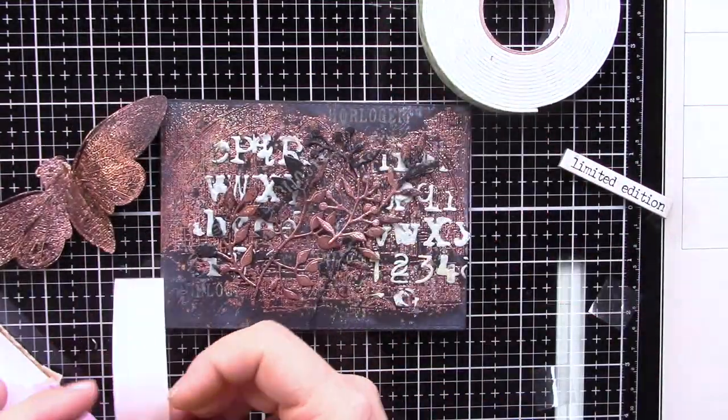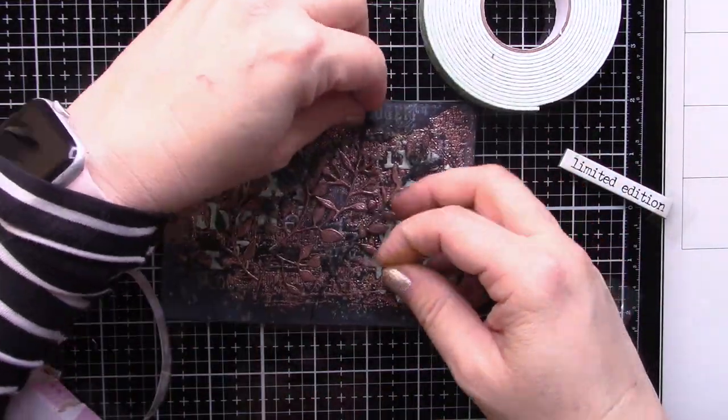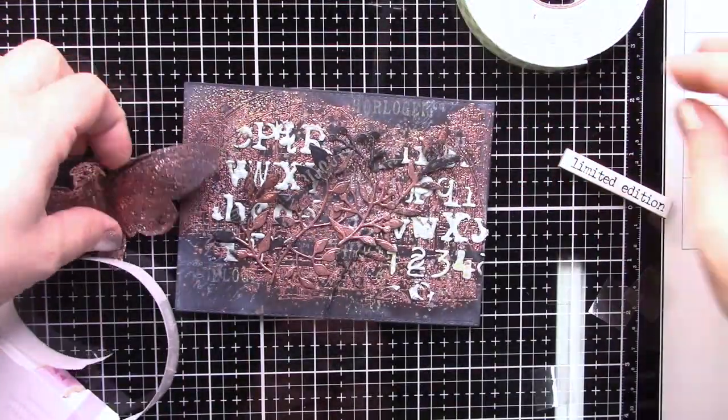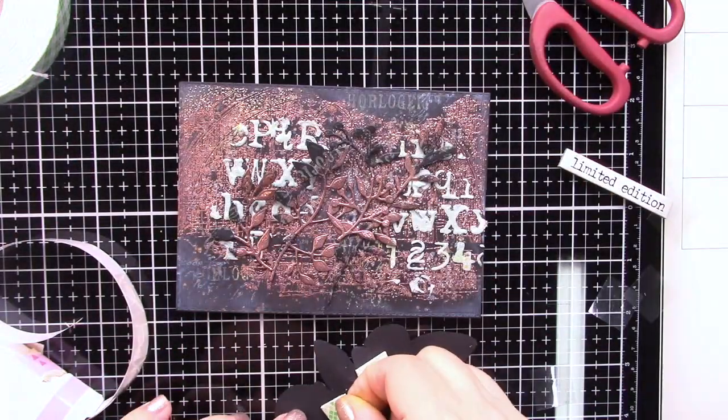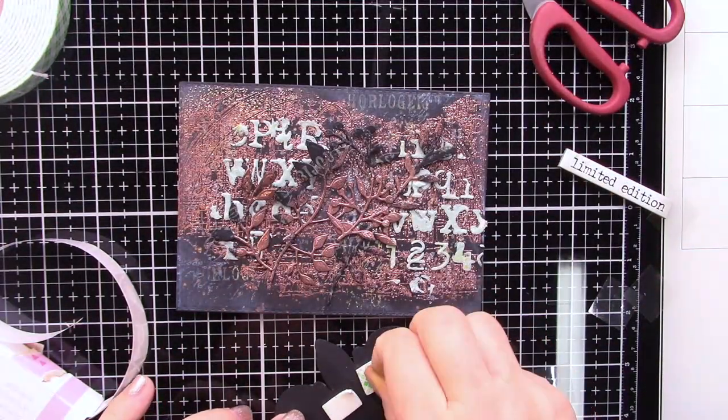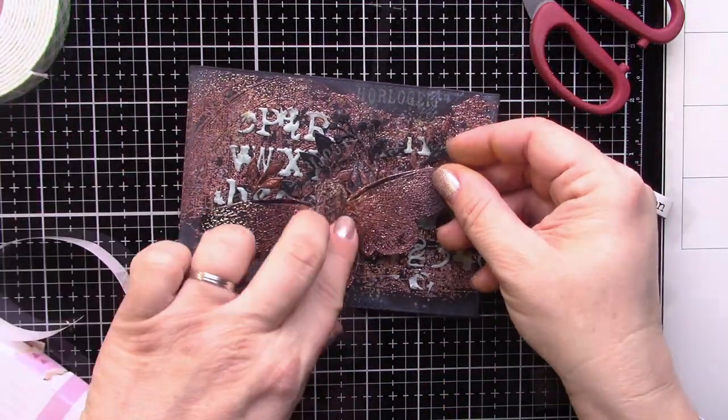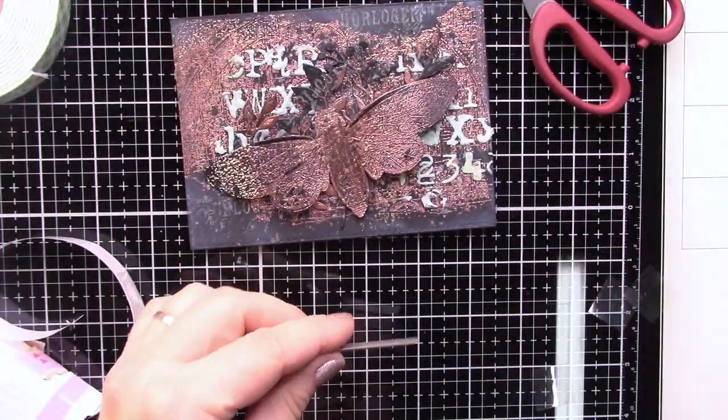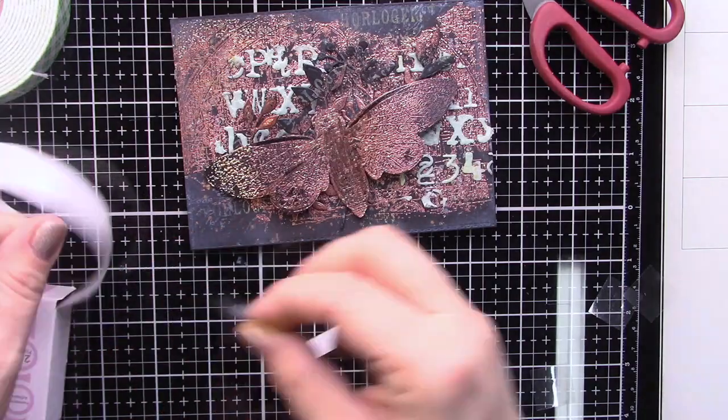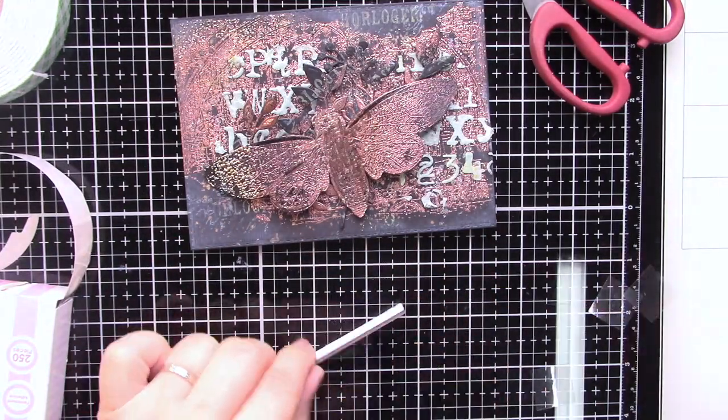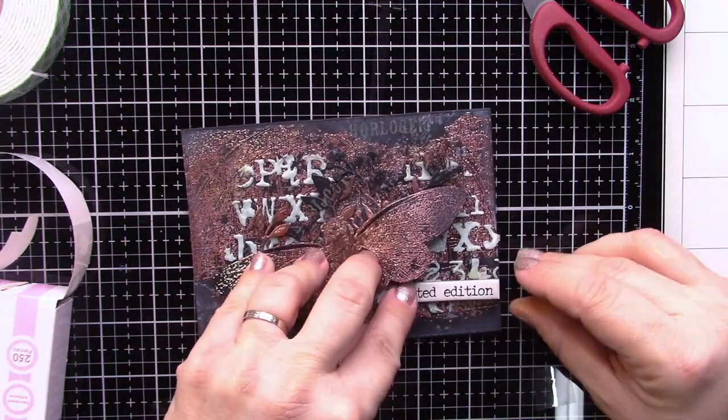All my branches will be glued with glue dots but the moth will be glued with 3D foam. I'm just making some bouquet or cluster behind. I don't want to cover a lot of my background because I really like this background. And this chipboard is also by Tim Holtz and I'm gluing it with glue dots.